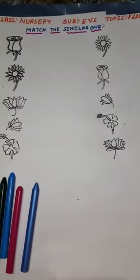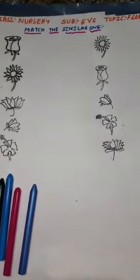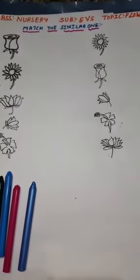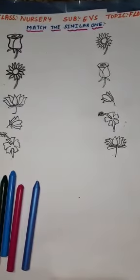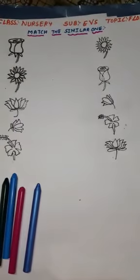Match the similar one. What we have to do? The things which are same, we have to match it. Matching, we have done earlier match the similar fruits, match the similar picture. Same here, so let's begin.